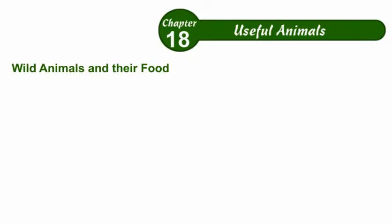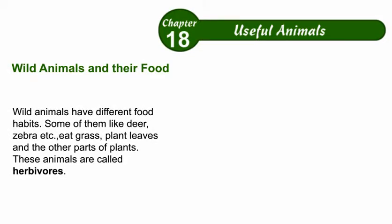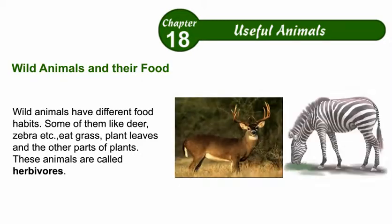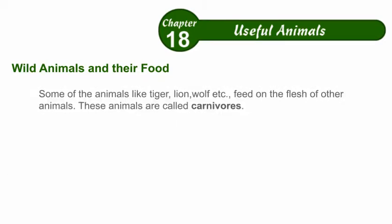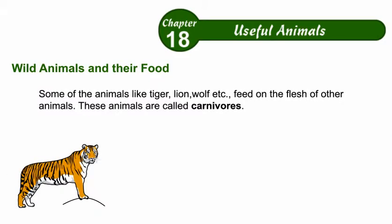Wild animals have different food habits. Some of them, like deer and zebra, eat grass, plant leaves, and other parts of plants. These animals are called herbivores. Some animals, like tiger and lion,